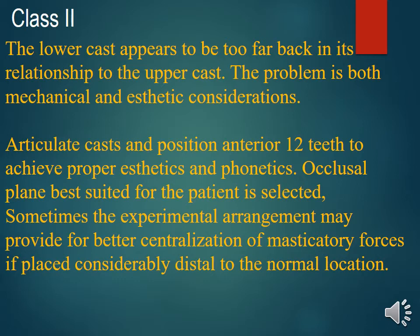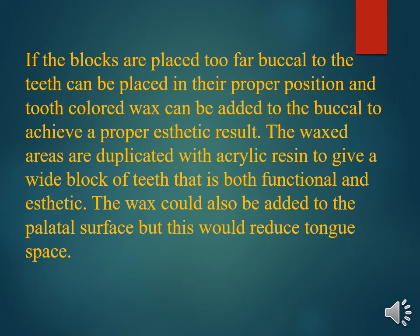When the lower cast appears too far back relative to the upper cast, the problem involves both mechanical and aesthetic considerations. Articulated casts are used and 12 anterior teeth are positioned to achieve proper aesthetics and phonetics. The occlusal plane best suited for the patient is selected, and an experimental arrangement may provide better centralization of masticatory force if placed considerably distal to the normal location. Tooth-colored wax on the buccal surface can also be duplicated in acrylic resin to achieve a proper aesthetic and functional result.